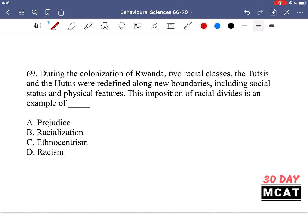Question 69 is saying during the colonization of Rwanda, two racial classes, the Tutsis and the Hutus, were redefined along new boundaries, including social status and physical features. This imposition of racial divides is an example of what? So you're imposing a racial divide. You're doing something along new boundaries. The key thing here is that.